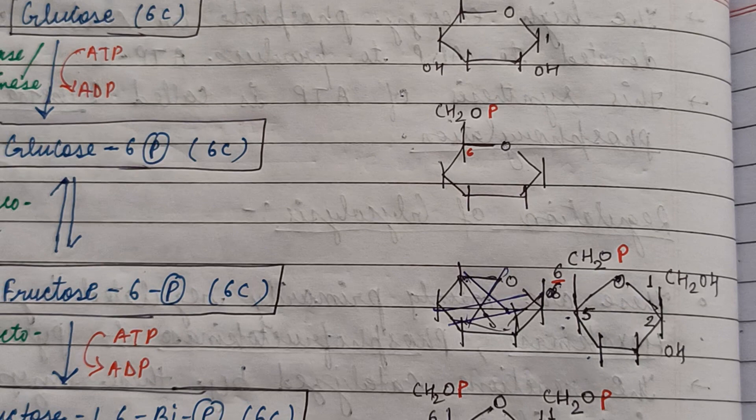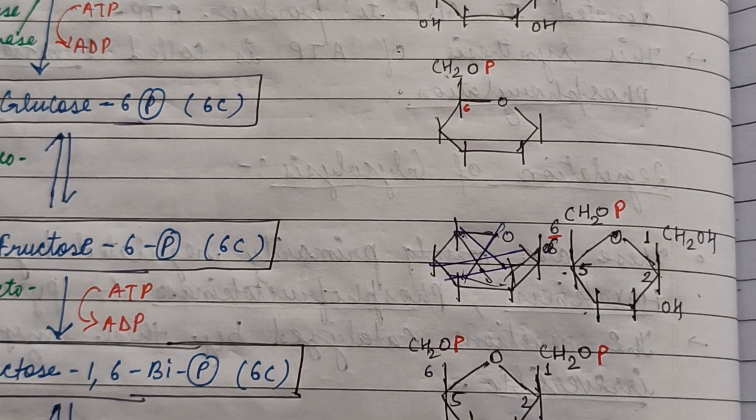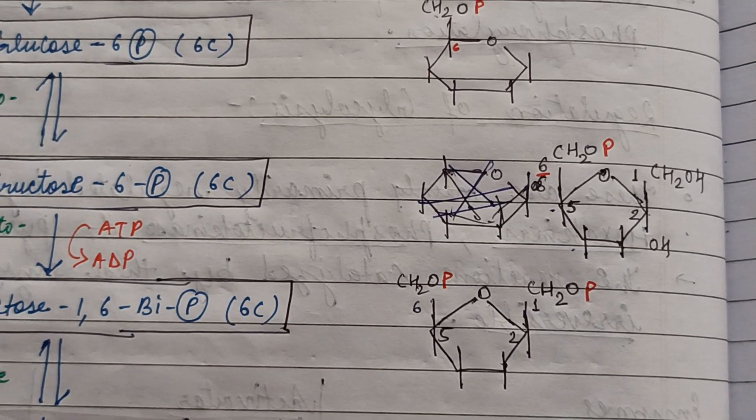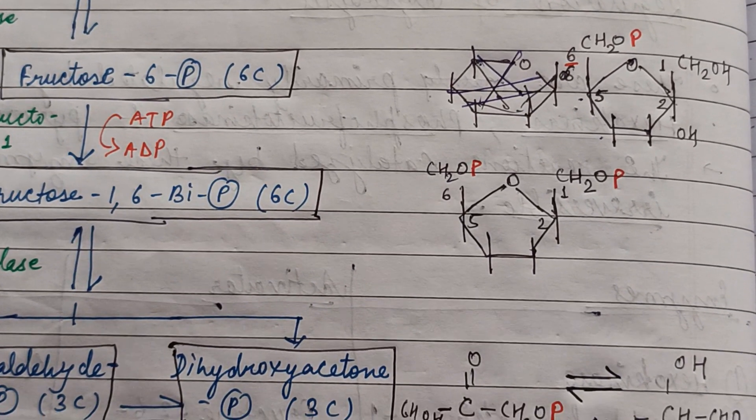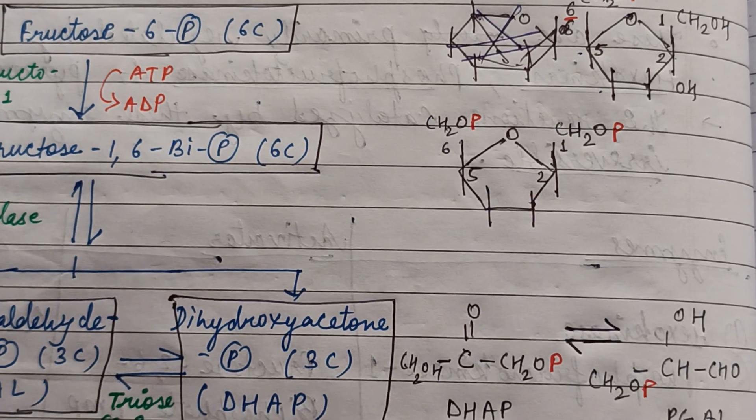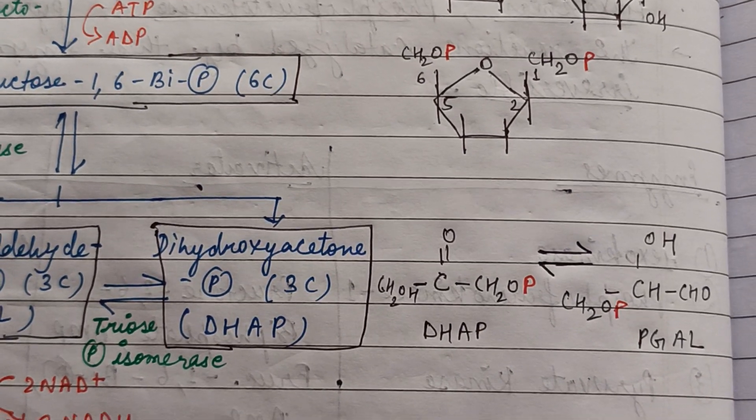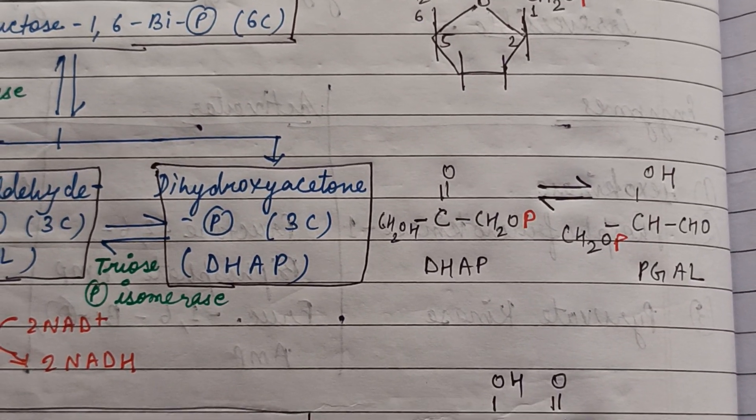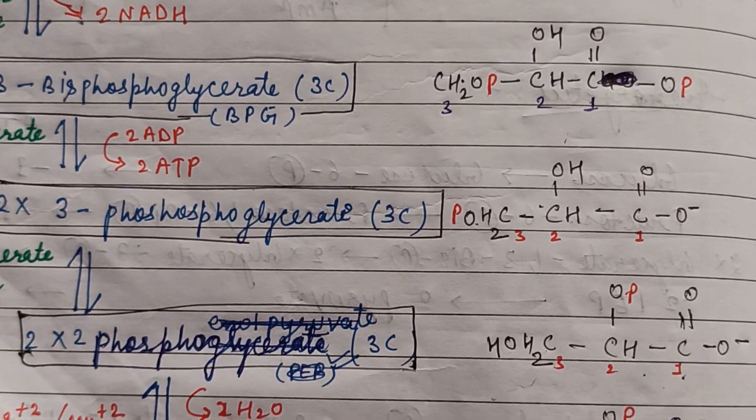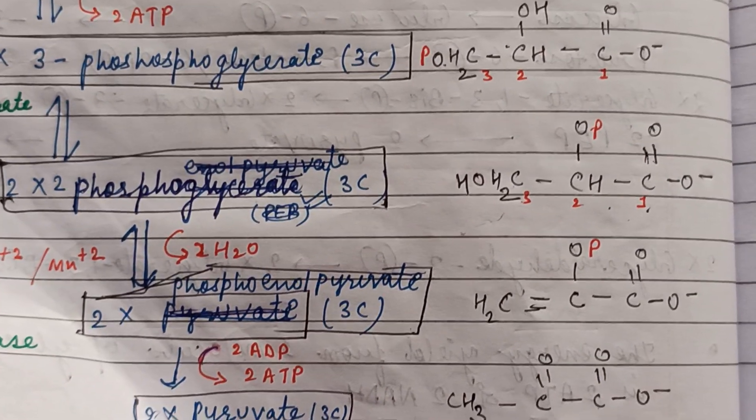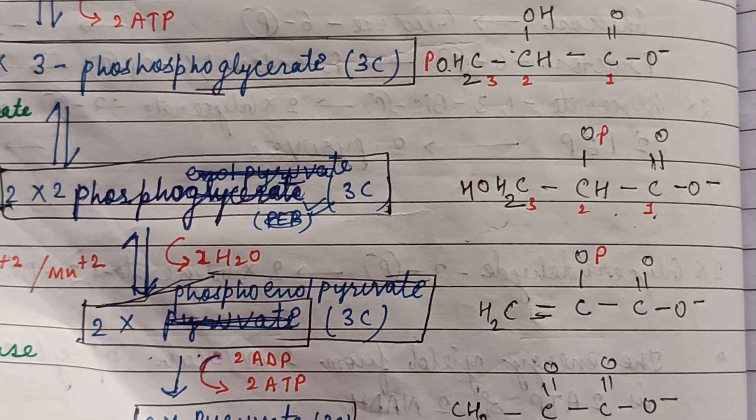We can see in this structure that it is the structure of glucose in which phosphate is added on the sixth position of the carbon, and then it is converted into fructose form. Fructose 1,6-bisphosphate is added on the fructose position and then splits into DHAP and PGAL, which is converted into two molecules of PGAL. Then these structures are formed and as a result, two molecules of pyruvate are formed.